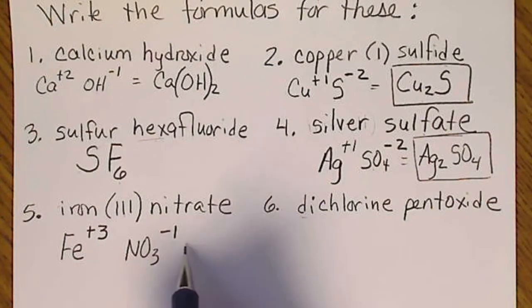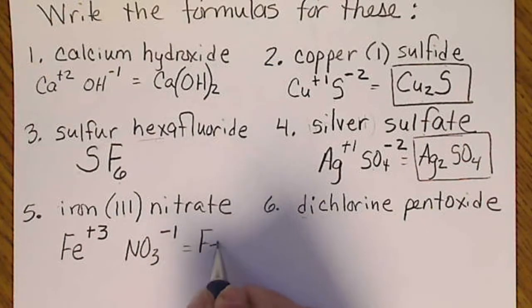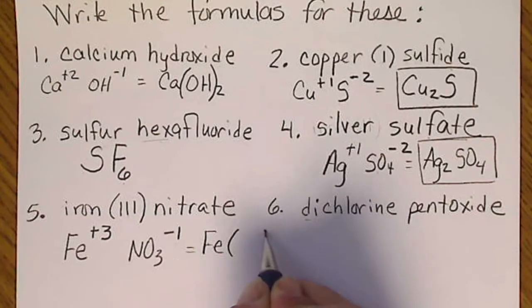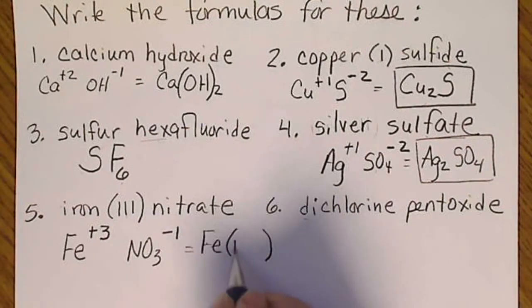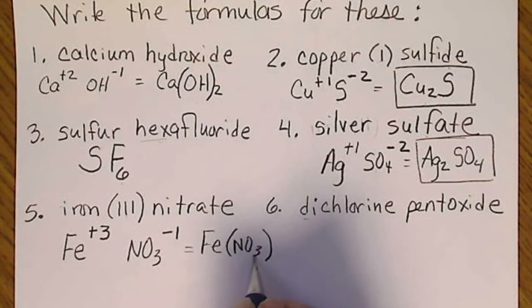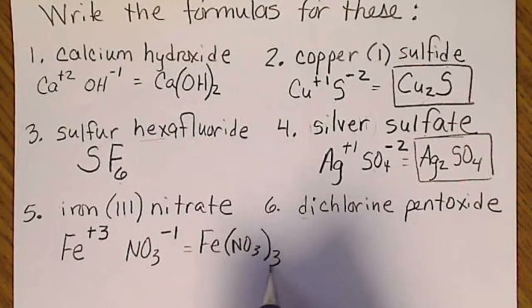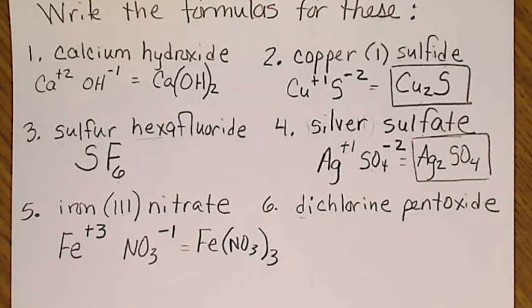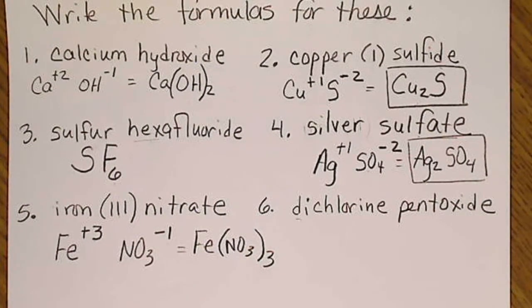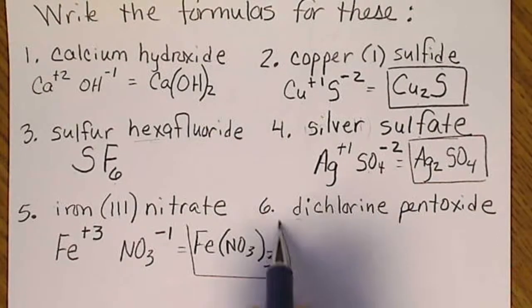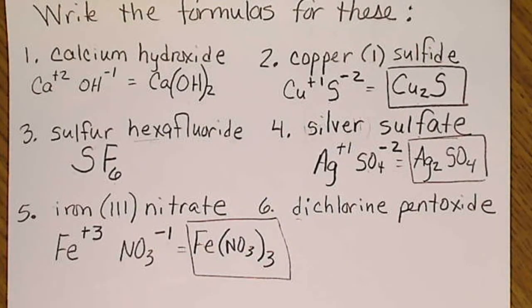So we need three nitrates for every iron. We would write iron, and then in the parentheses is where we write the NO3, and then we need three of them. That would be iron(III) nitrate.